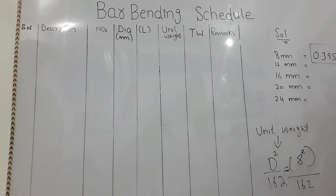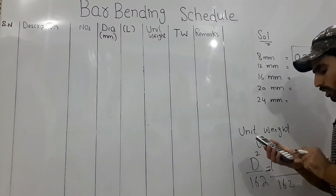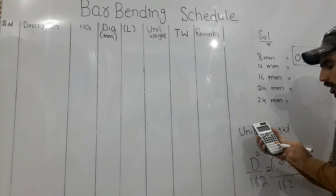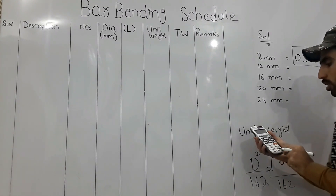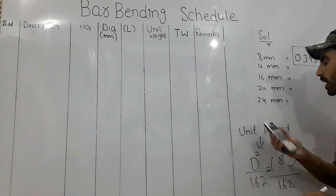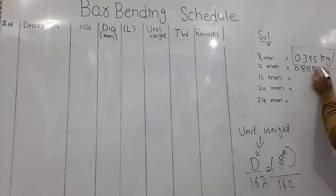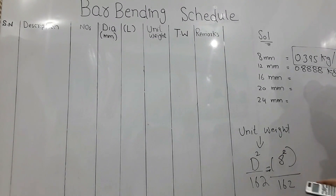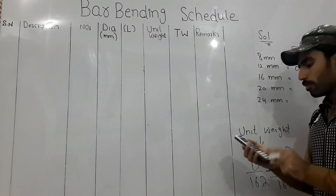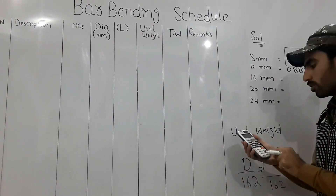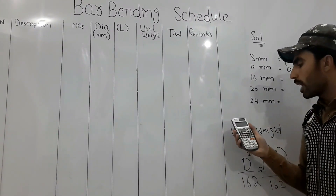For 12mm diameter: 12² ÷ 162 = 0.888 kg per meter. For 16mm diameter: 16² ÷ 162 = 1.52 kg per meter. Keep these values in mind.